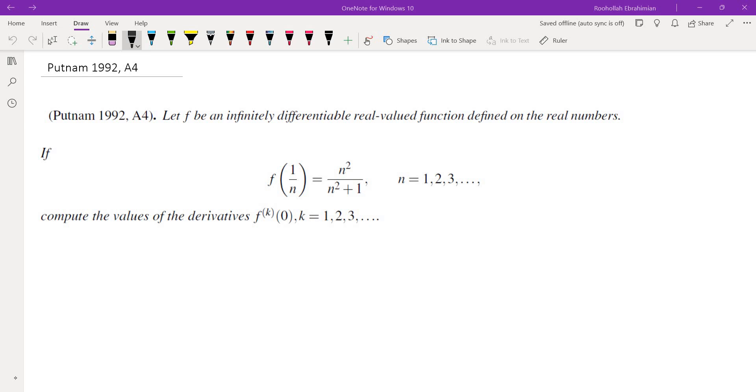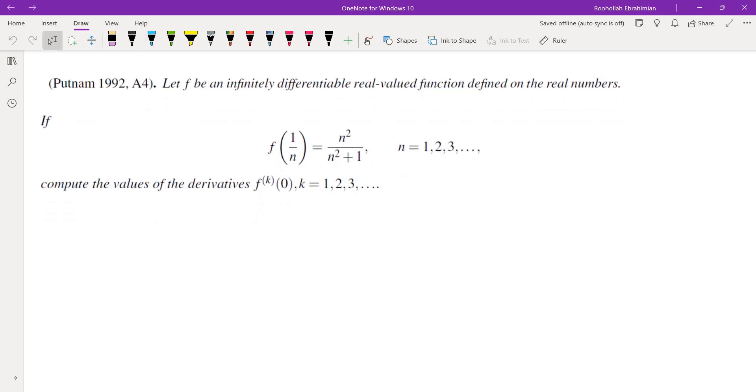When I looked at this problem the first thing that came to my mind is can I find a function that satisfies this property and it's not very difficult to see that if you write down the right hand side as 1 over 1 plus 1 over n squared clearly there is some function that satisfies this equality and that function is f of x equals 1 over 1 plus x squared.